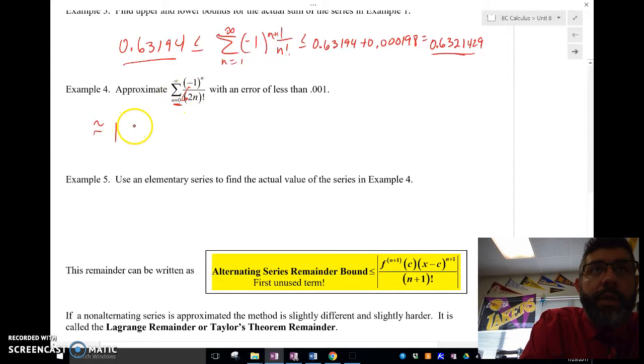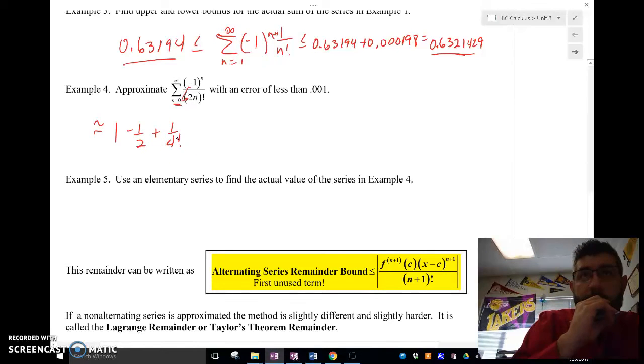Plug 1 in. And I'm going to get 1 half. And I'm going to get 1 over 4 factorial. And 1 over 4 factorial is still not small enough.